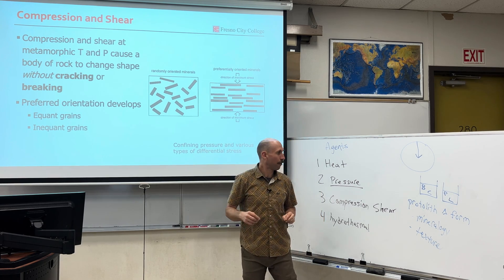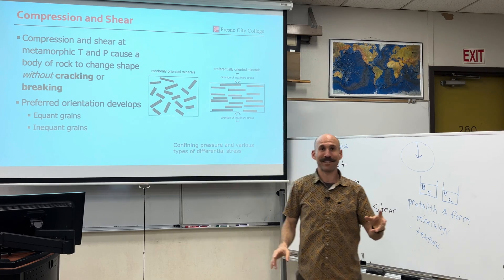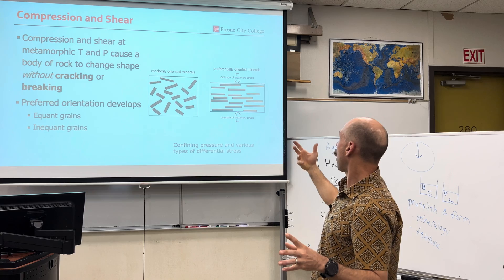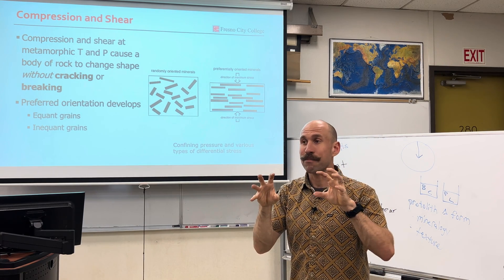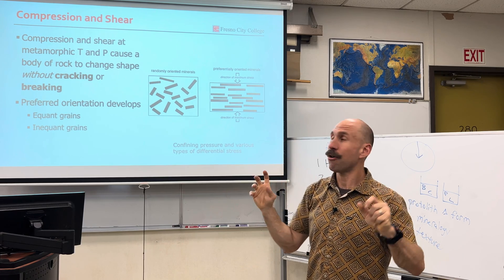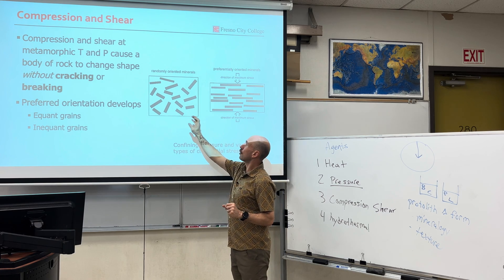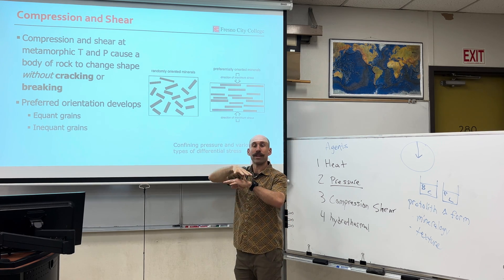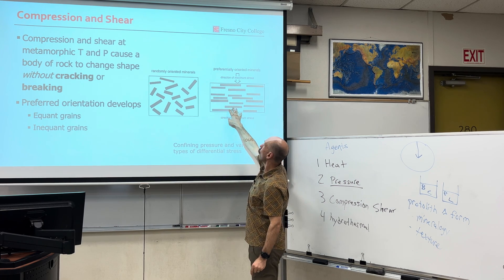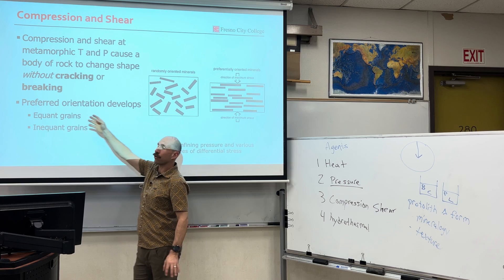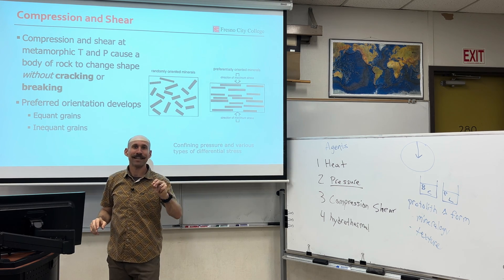The rock doesn't crack, the rock doesn't break, the rock doesn't melt. There's a migration of the crystal grains — because it's hot, it stays solid but can change its form. Temperature and pressure cause the body of rock to change shape without breaking and without melting, giving it preferred orientations. We can have grains that are equant — the same size — or grains of different sizes, known as inequant.